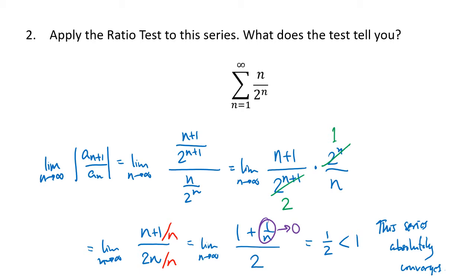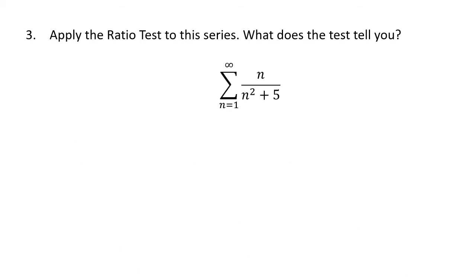In the case where we get a ratio greater than 1, we can conclude the series diverges. But if the limit of the ratio equals 1, that's a case where the ratio test is inconclusive — and we're going to see that in the next example. So here we have n divided by n squared plus 5, and we're told to apply the ratio test, so we look at the limit as n goes to infinity of the absolute value of a_{n+1} divided by a_n.